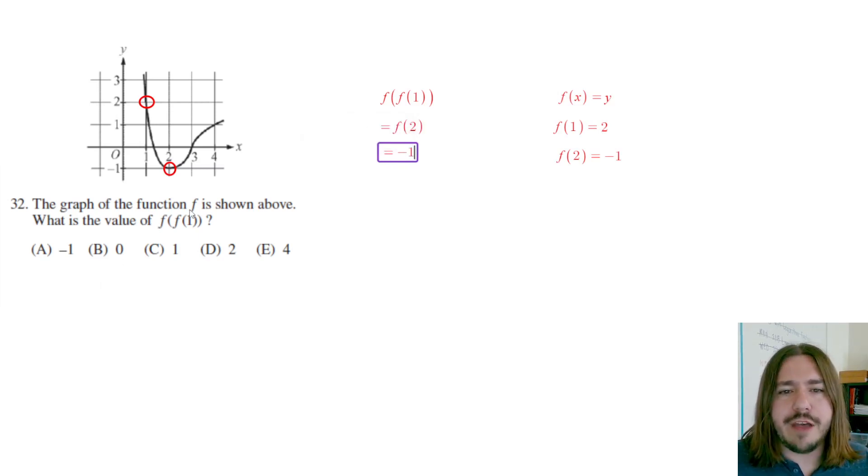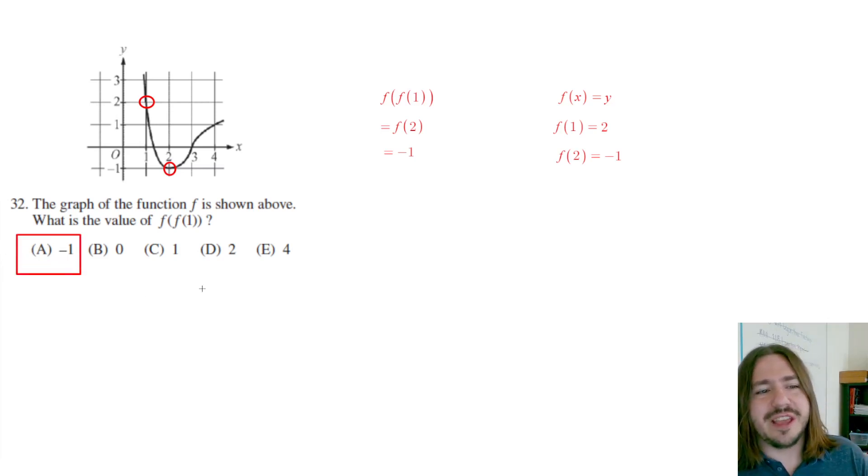What is the value of f of f of 1? Well, it's negative 1, so our answer choice here should be A. Let's do a box instead of a circle. Okay, so yeah, 32 is going to be A, and that's it for number 32. Thanks for watching, and have a great day.